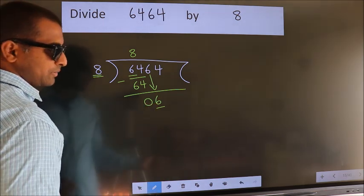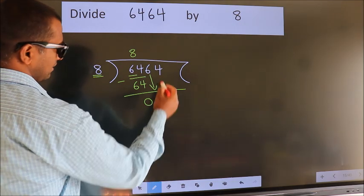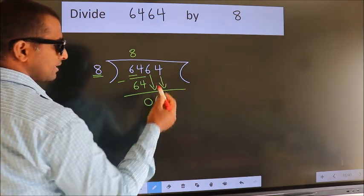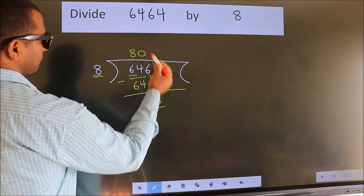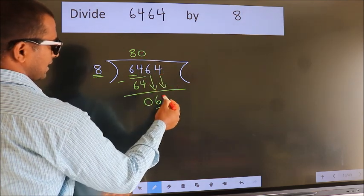So we should bring down the second number. The rule for bringing down the second number is to put 0 here. Then only we can bring down this number.